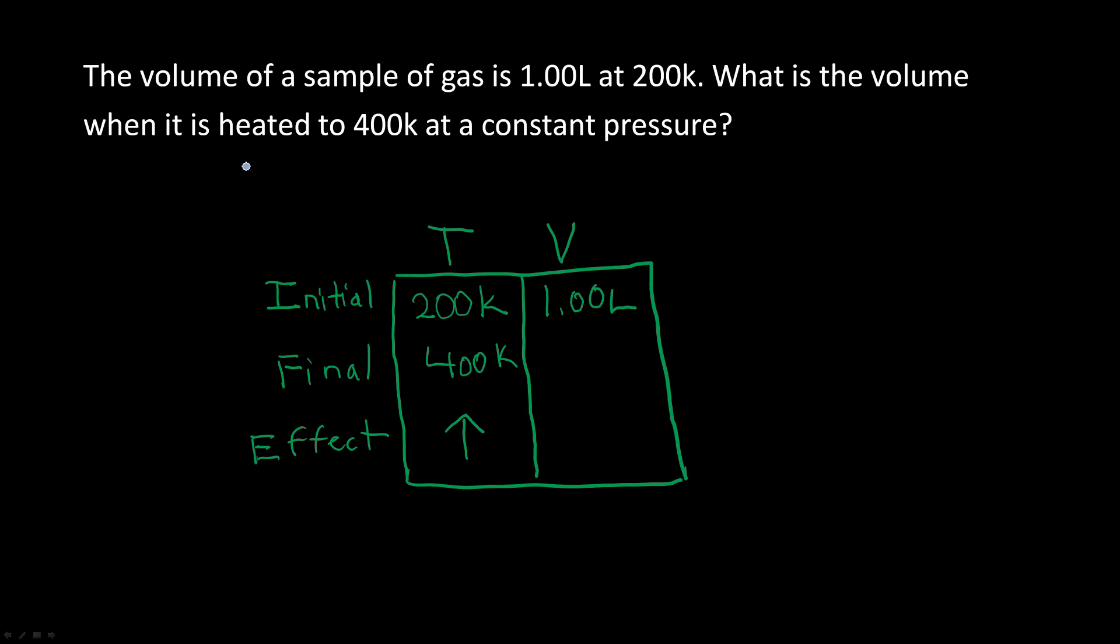Okay, so now let's try a problem using Charles Law. Now this problem basically states that the volume of a sample of gas is one liter at 200 Kelvin. What is the volume when it is heated to 400 Kelvin at a constant pressure? Now remember, this is at a constant pressure, and it's not said directly in this problem, but the number of particles are also going to stay constant, so that we know this is a Charles Law problem.